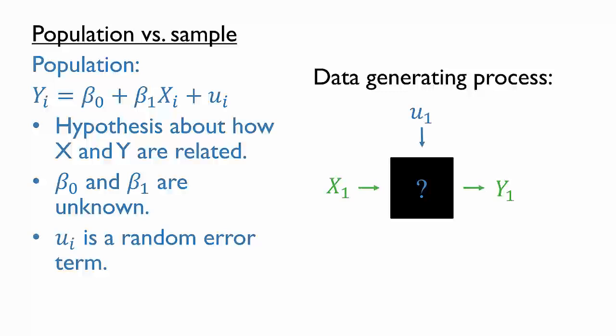We'd ideally like to open that black box to see the data generating process. You might imagine the parameters β₀ and β₁ as internal settings of the data generating process going on inside of this black box. In practice, we can't do that.